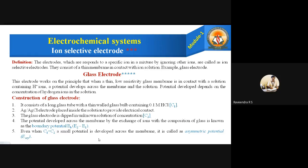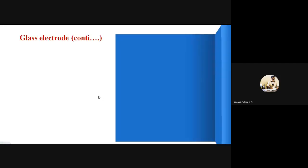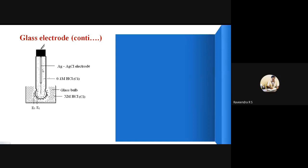The fifth point: when C1 equals C2, a small potential still develops across the membrane. This is called the asymmetric potential, denoted as E_ac.